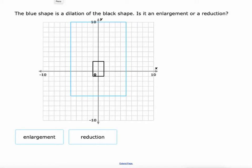Is this blue shape an enlargement or a reduction of the black shape? It is an enlargement. Okay, the blue shape is bigger than the black shape. So the black shape was made bigger. It was enlarged by whatever dilation was done. So there's an example of an enlargement.